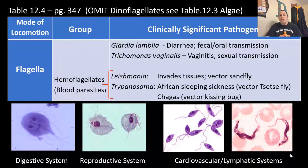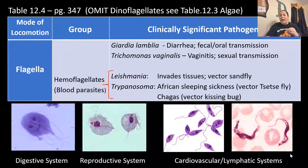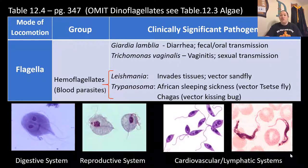We also have Trichomonas vaginalis, which causes vaginitis — inflammation of the vagina — transmitted through sexual contact, affecting the reproductive system. We also have a group called hemoflagellates — parasites that like blood. The first is Leishmania, which invades tissues and gets injected through bites of sand flies, entering your cardiovascular and lymphatic systems and causing sores and deep infections. The trypanosomes cause diseases like African sleeping sickness, passed through the tsetse fly, and Chagas disease, passed through the kissing bug, both causing major issues in the cardiovascular and lymphatic systems.